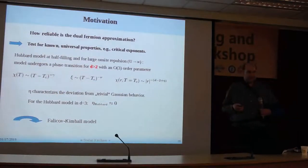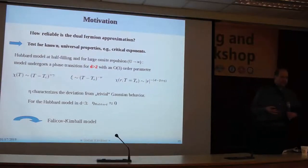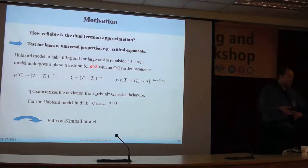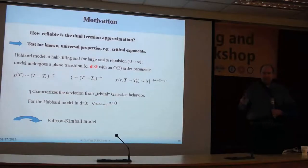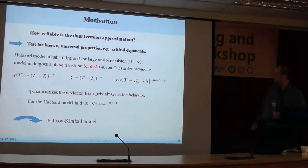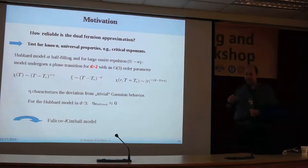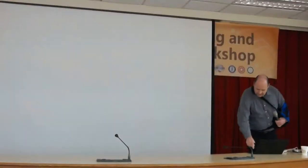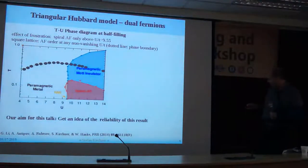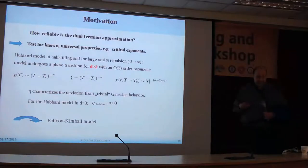When you ask how reliable the approximation is, perhaps it's a good idea to ask for something universal. Because the law is, if you include more diagrams, things will shift and transition temperatures will shift. But if you have something that is universal, you would like to reproduce it. And what is universal are critical exponents. So let's look into a limit where we know the Hubbard model and where we can ask what critical exponents give us. The Hubbard model at half-filling has for very large U a phase transition where the order parameter has O(3) symmetry.